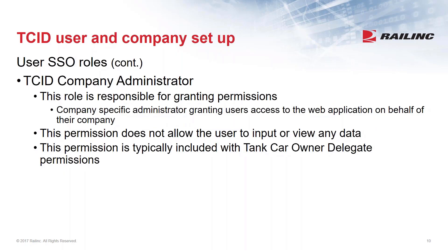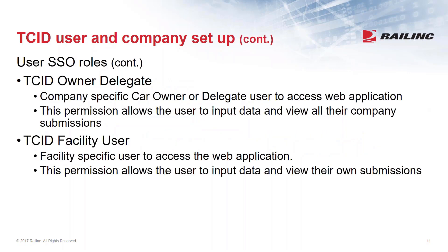A Company Administrator is responsible for granting permissions on behalf of their company. This role does not allow any interaction with the application - it strictly handles granting or declining permission. Since it has no application interaction, we suggest it's typically combined with an owner delegate or facility user role. The Owner Delegate role is the most robust role, where the user works on behalf of a company and has full access to all the company's inspections - open and submitted - and can view reports.